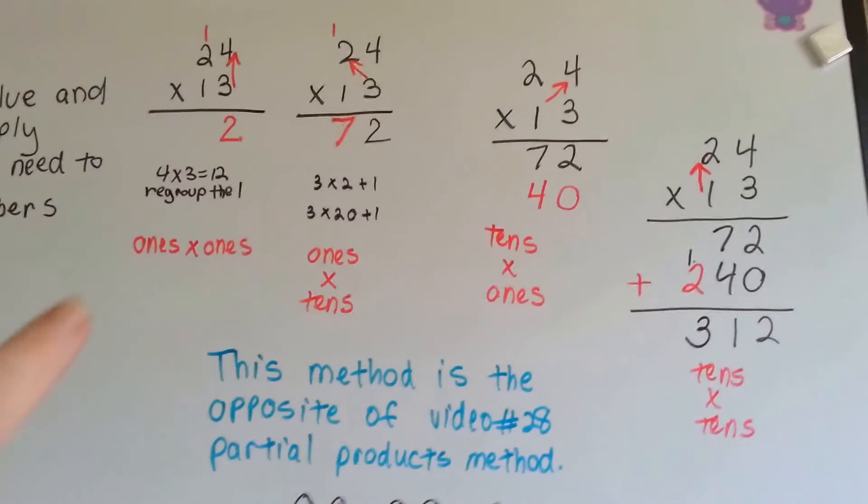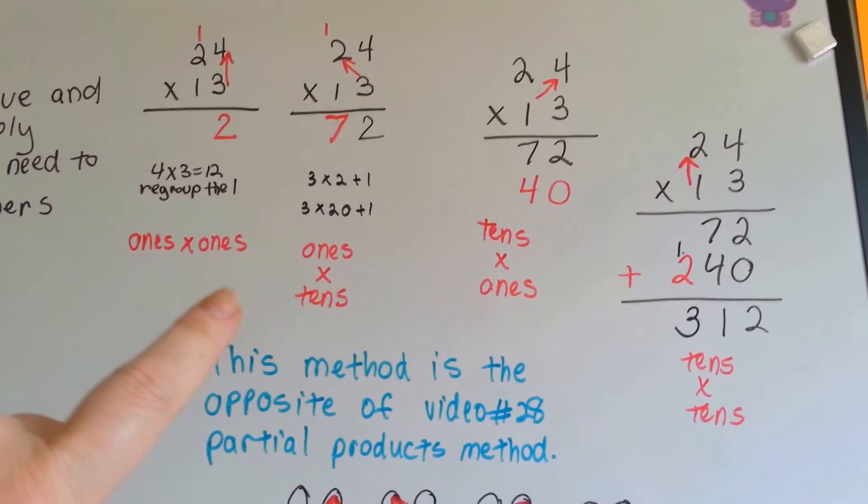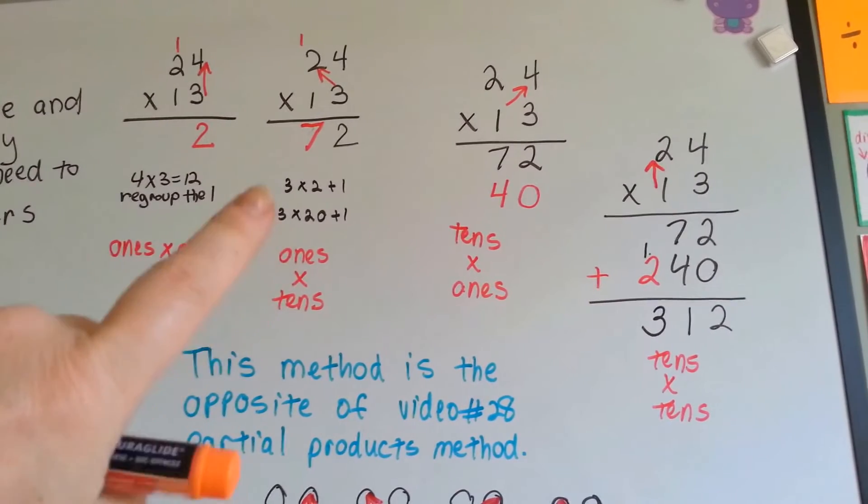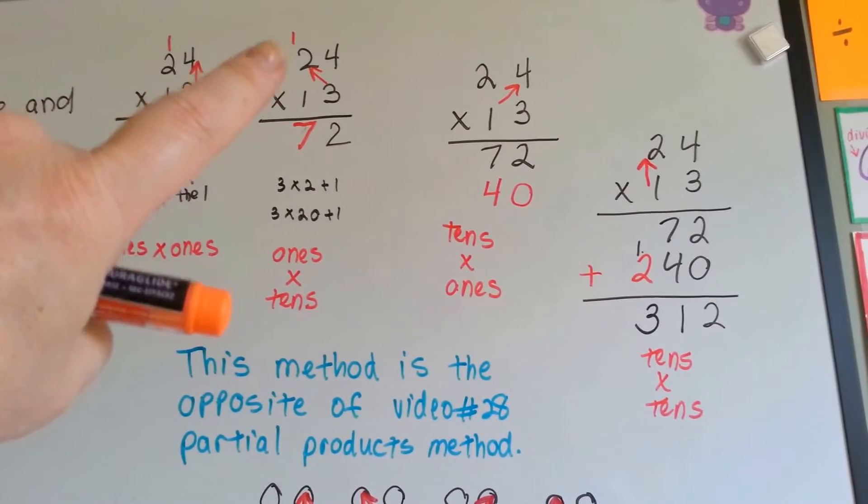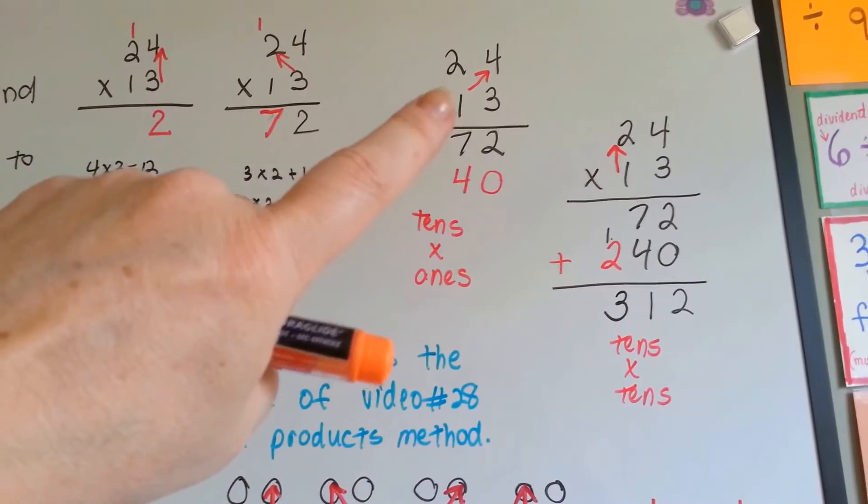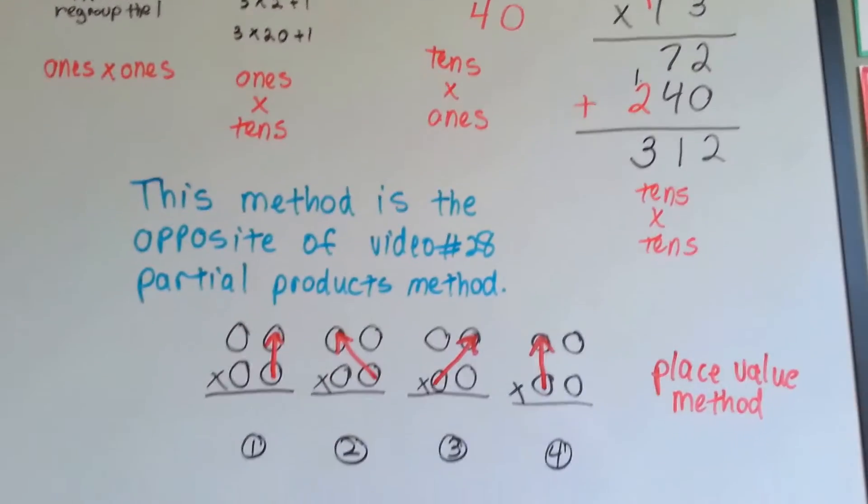So, in this method, we multiplied the 1s by the 1s, the 4 times the 3, then the 1 times the 10s, the 3 times the 20, and we added the carryover with it. Then we did the 10s here times the 1s, and then the 10s times the 10s. Now, if you remember from our last video, when we did partial products, we didn't do it this way, we did it the opposite way.